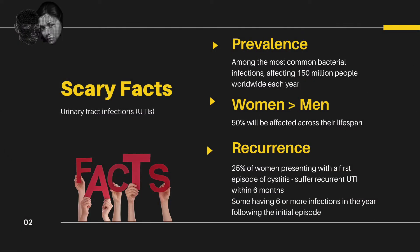There are some facts about UTI which one must know. Urinary tract infections are among the most common bacterial infections — they affect around 150 million people worldwide every year. Women are much more prone to UTI compared to men, and at least 50% of all women will get a urinary tract infection across their lifetime at least once. Recurrences are common: 25% of women who present with a first episode of cystitis will get a recurrent urinary tract infection within the next six months.